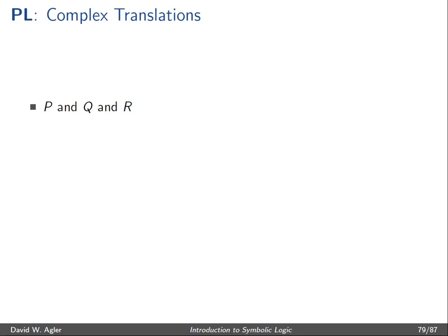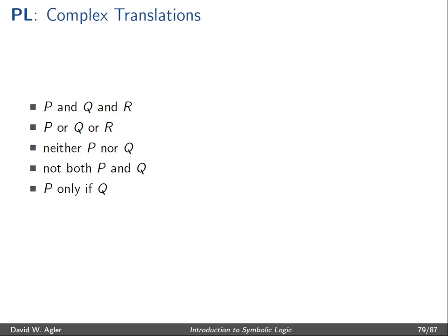Here we'll focus on the following kinds of expressions: expressions where there are multiple uses of 'and', like p and q and r; expressions where there are multiple uses of 'or', like p or q or r; 'neither p nor q'; 'not both p and q'; 'p only if q'; and 'p even if q'.